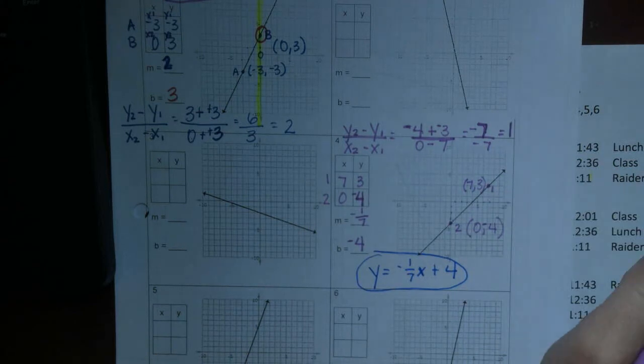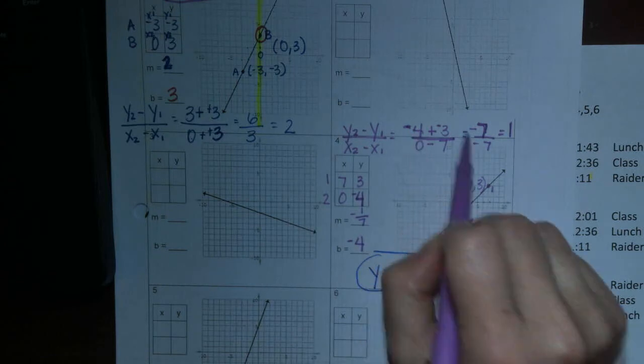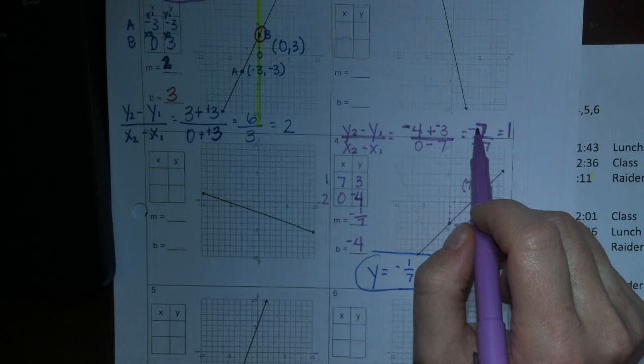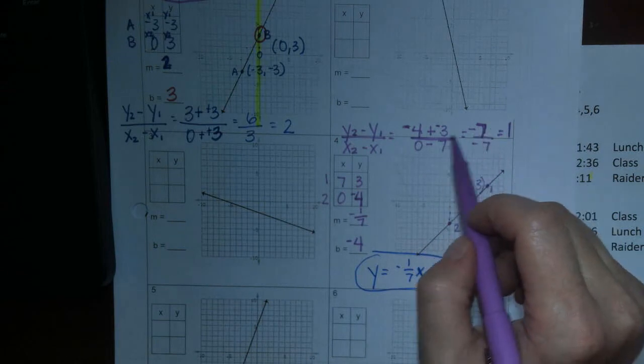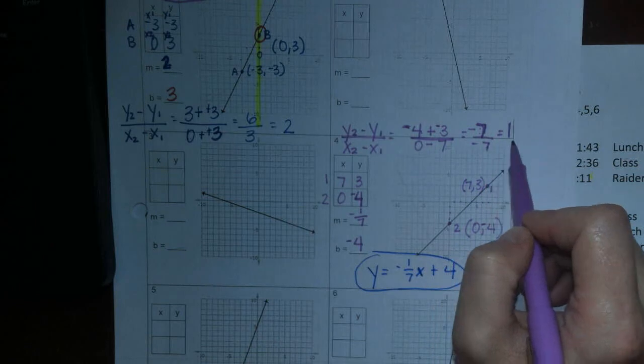Now, it's negative 7 over negative 7. So, guys, I messed up. I'm so sorry. When I changed that to a negative 4, it changed my whole problem. That's why it's really important not to make sure you're doing things right. So that makes this a negative 7, which, in fact, negative 7 divided by negative 7 is a positive 1.